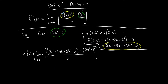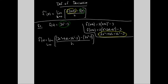So: f of x plus h means you're plugging x plus h into your function for x, then you subtract the original function, divide by h, and last but not least, take the limit. Be careful — I'm not taking the limit yet; that's the last thing I do, so I'm just going to copy that down.